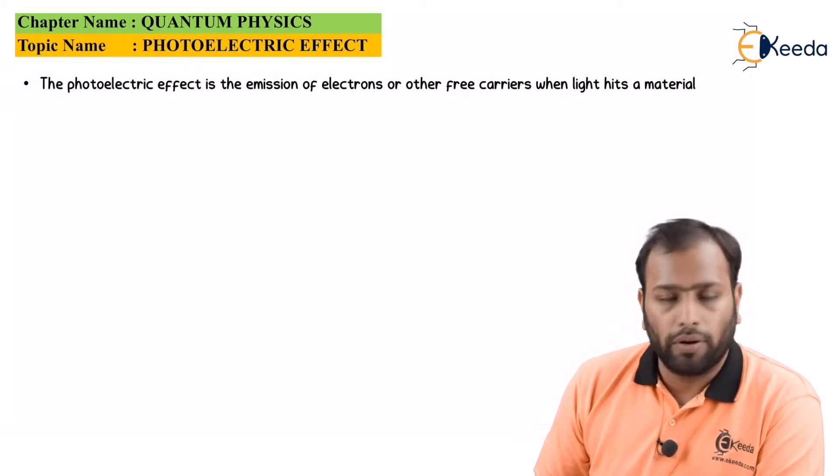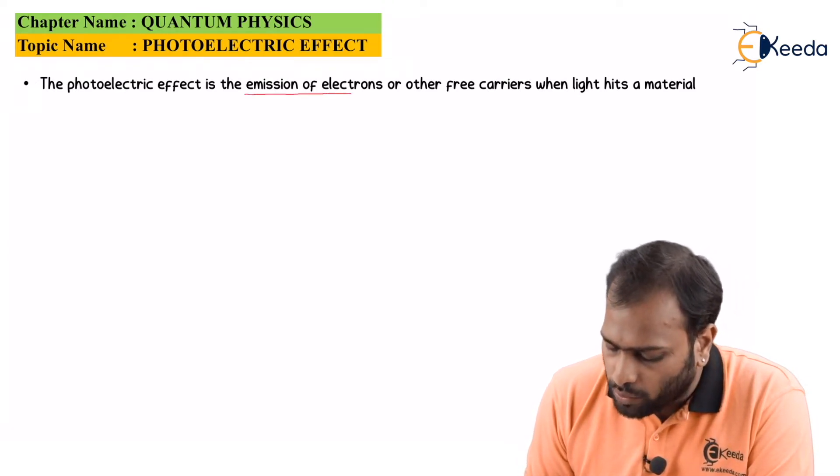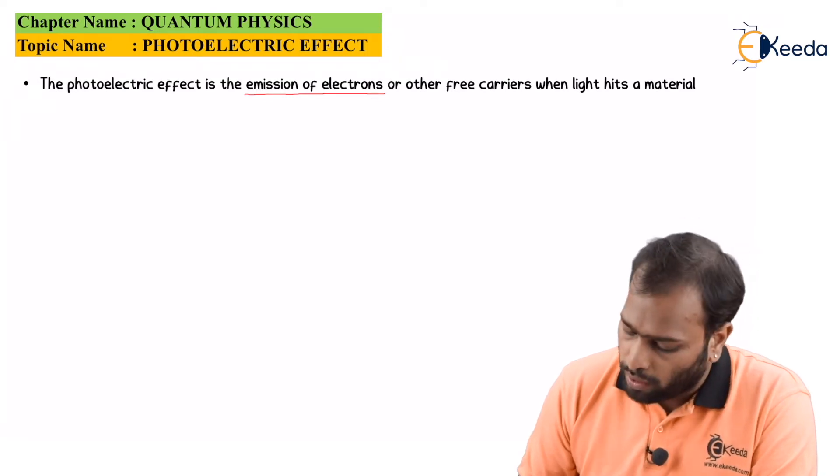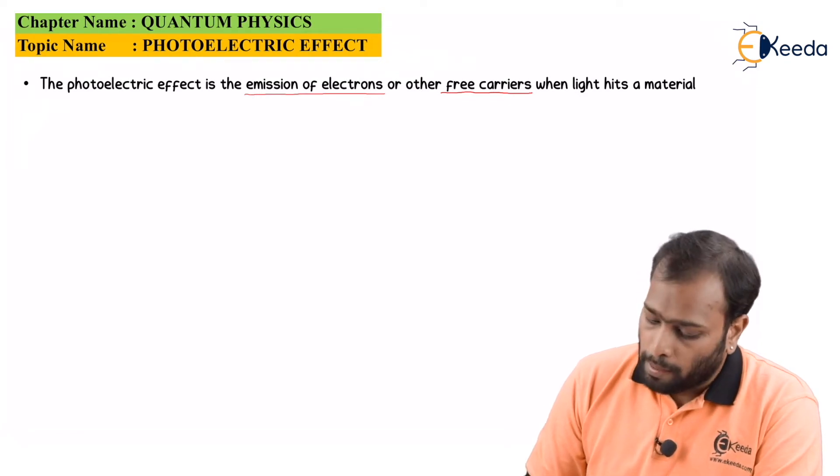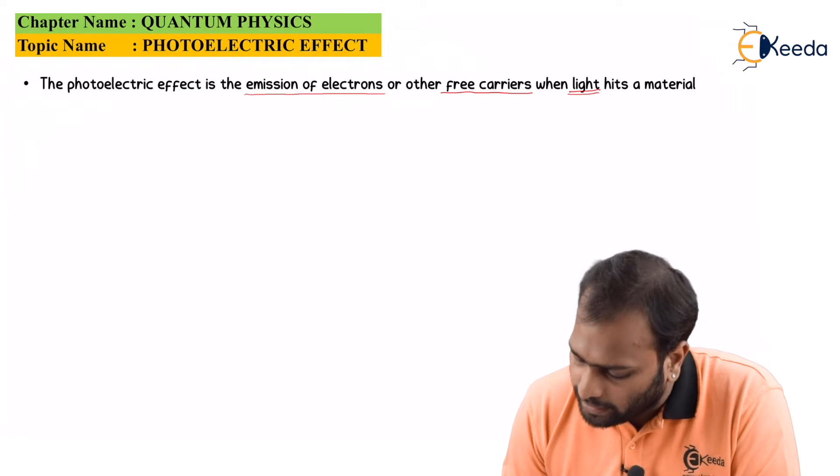Now, the most important points are emission of electrons. As you all know, electricity is being conducted by only electrons or free carriers in case of some other materials except metals. But only when light hits a material.